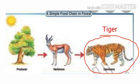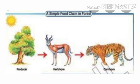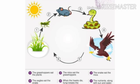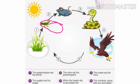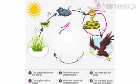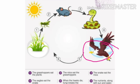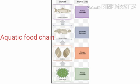Another food chain in a grassland: grasses are eaten by a grasshopper, the grasshopper is eaten by a frog, the frog is consumed by a snake, and the snake is finally consumed by a hawk, which is the top carnivore. In an aquatic ecosystem, algae in a pond are consumed by small fishes.